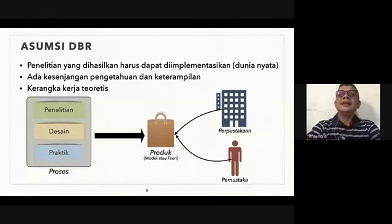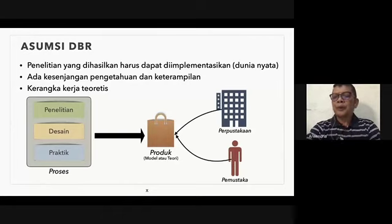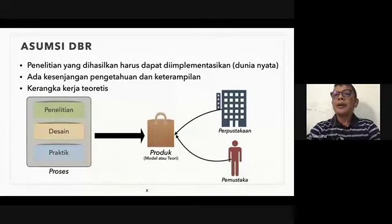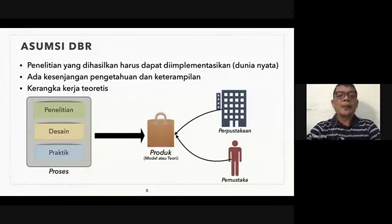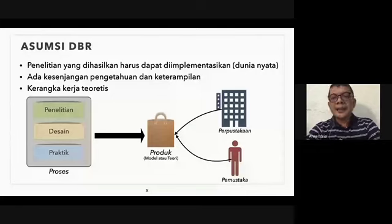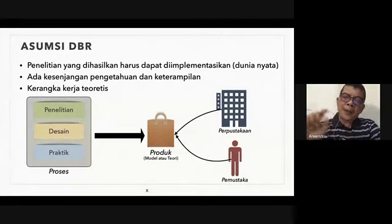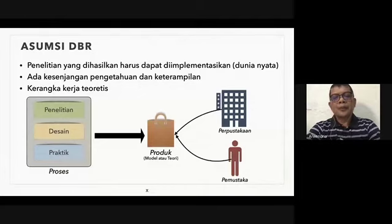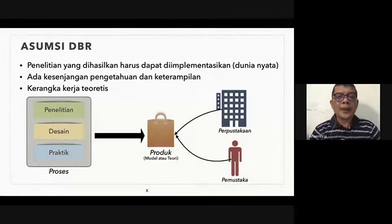Ada konsep iterasi dalam DBR—iterasi artinya berulang-ulang. Hasilnya adalah berupa produk. Produk itu bisa berupa model, baik dalam bentuk tercetak, model di atas kertas, maupun model yang digunakan untuk produk jadi—apakah dalam bentuk software atau peralatan yang mampu meningkatkan efektivitas di perpustakaan. Hasilnya bisa dimanfaatkan kembali untuk perpustakaan dan pemustaka. Siklus ini berulang sampai ditemukan sebuah alat atau teori yang betul-betul relevan dengan kondisi perpustakaan kita.